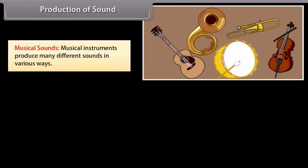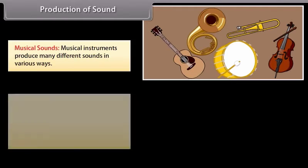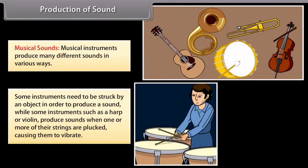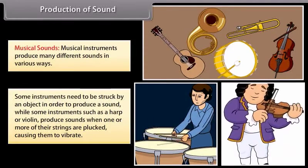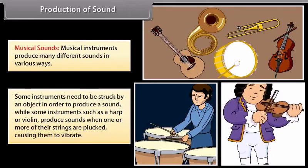Musical sounds: Musical instruments produce many different sounds in various ways. Some instruments need to be struck by an object in order to produce a sound, while some instruments such as a harp or a violin produce sounds when one or more of their strings are plucked, causing them to vibrate.